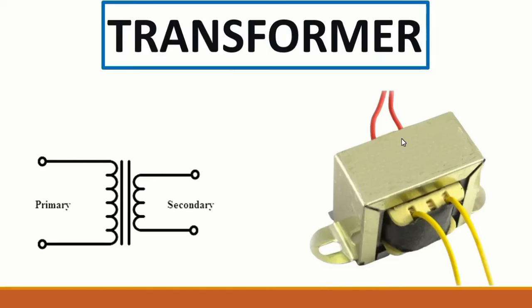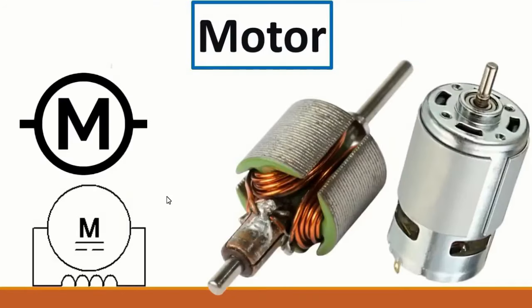The transformer contains two parts: the primary part with the first winding or inductor, and the secondary part with the second inductor. The purpose of the transformer is to transfer energy from one side to the other.